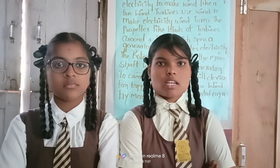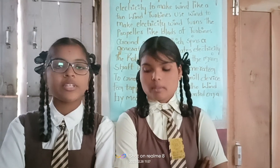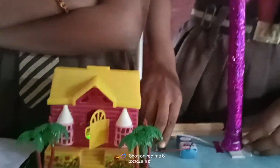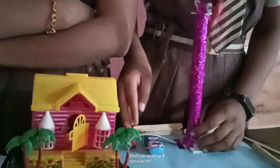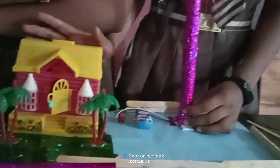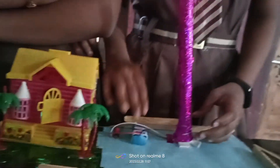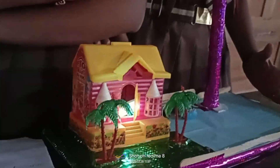Good morning everyone. I am a student studying in the English standard. Wind turbines are a special device. You can make wind like a fan. The wind turbines are used to make electricity. They build the propeller like the edge of a turbine around the rotor. The generator creates electricity, and the rotor is connected to the main shaft to generate electricity. Thank you.